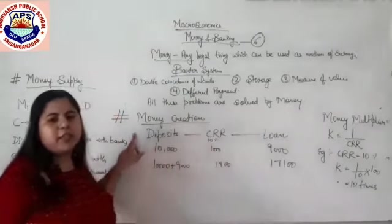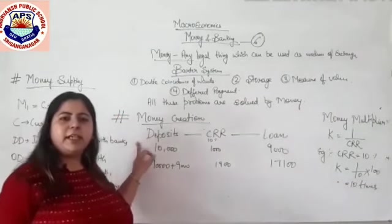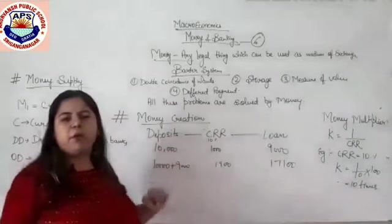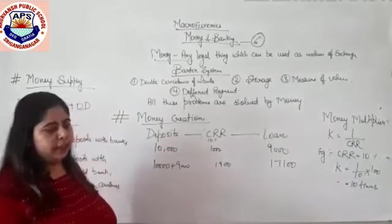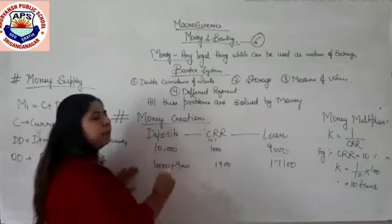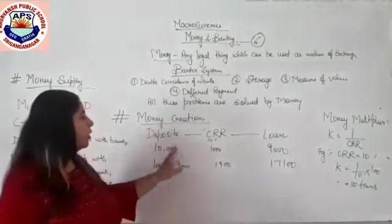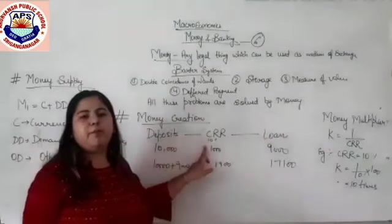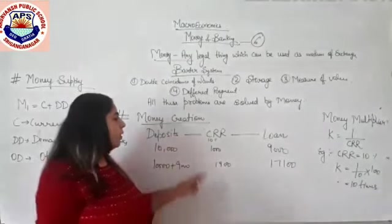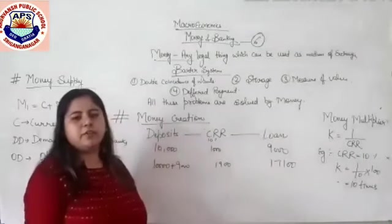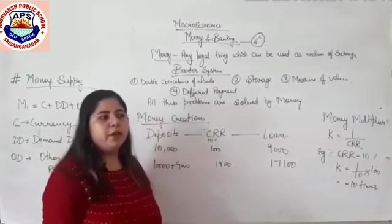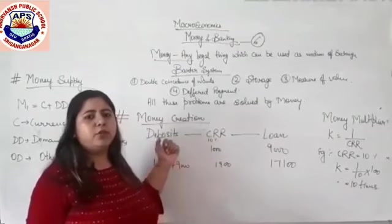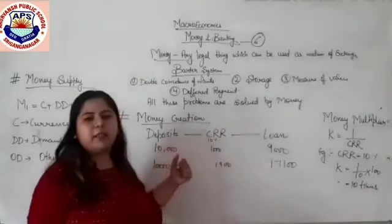How is money created? We know RBI decides and creates money, but commercial banks are also very important in creating money. When we have extra money, we deposit it in commercial banks. Commercial banks first keep a reserve — that is known as CRR, or Cash Reserve Ratio. This is very important so that when people come to withdraw their deposits, the bank can fulfill that.